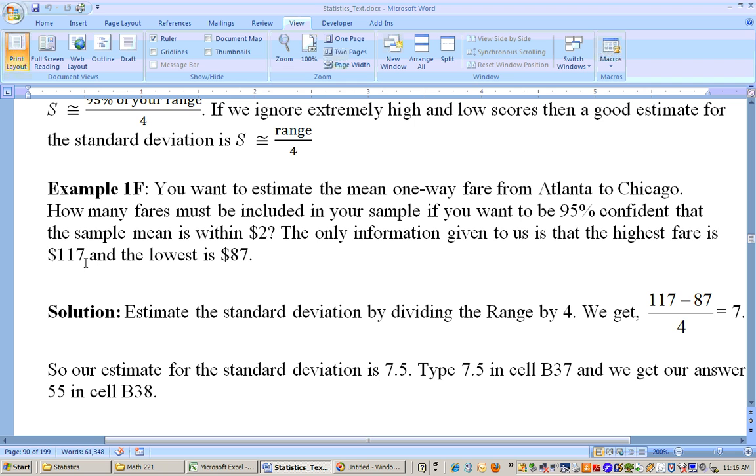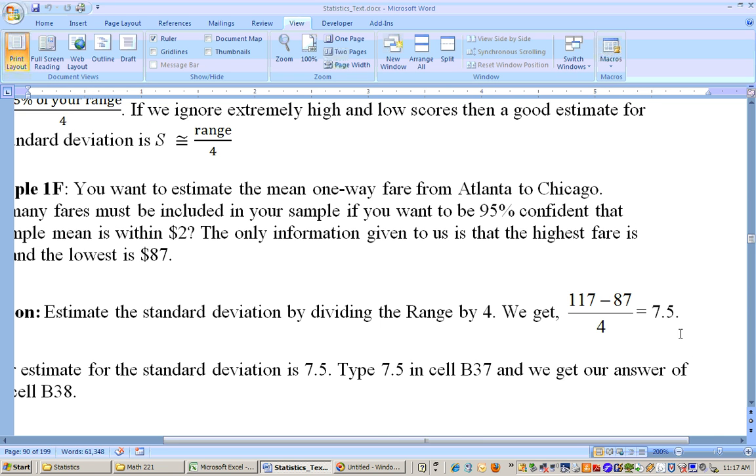So if we wanted to estimate the standard deviation here using this high and this low, we would just subtract them and divide by 4. And if you take 117 minus 87 divided by 4, you get 7.5.